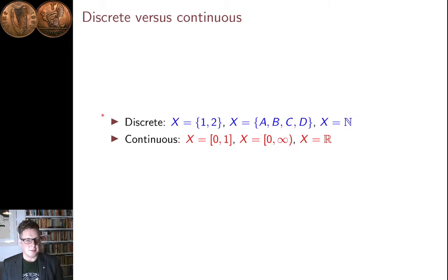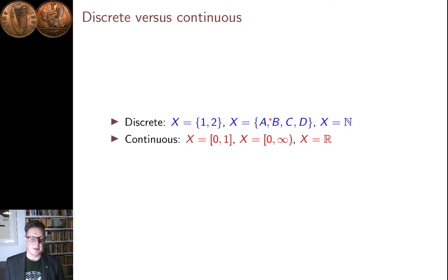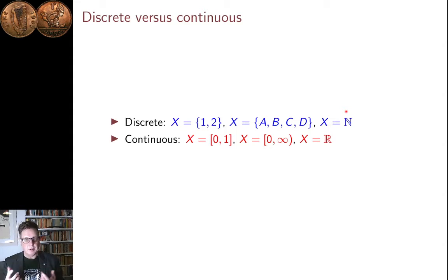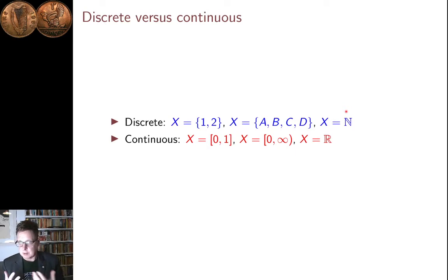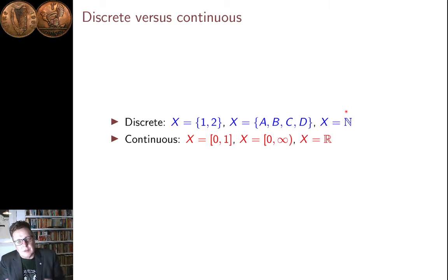Discrete distributions — we've seen lots of those. The sample space is made of discrete objects, maybe the numbers 1 and 2, maybe the letters A, B, C and D, or maybe all the natural numbers or all the positive numbers. One thing we learned was that moving from finite and discrete to infinite and discrete is reasonably harmless — it doesn't change very much. As long as the series you need to calculate the expected values converge, you can still calculate the expected values. Not much changes; the machinery is the same.